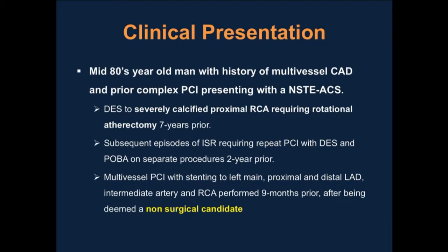This is a gentleman in his mid-80s with a history of multivessel coronary artery disease and prior complex percutaneous coronary intervention who presented to our center with non-ST elevation acute coronary syndrome. He had an extensive history of prior complex intervention, including a drug-eluting stent to a severely calcified proximal right coronary artery that had required rotational atherectomy years prior, with subsequent episodes of ISR requiring repeat PCI.